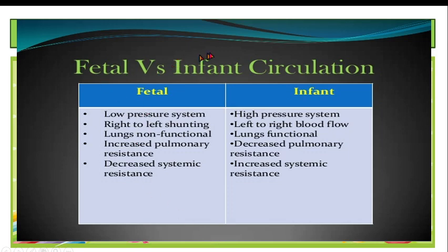The differences between fetal and infant circulation: in fetal circulation there is a low-pressure system with a right-to-left shunt, non-functional lungs, increased pulmonary resistance, and decreased systemic resistance. In infant circulation there is a high-pressure system with left-to-right blood flow, functional lungs, decreased pulmonary resistance, and increased systemic resistance.